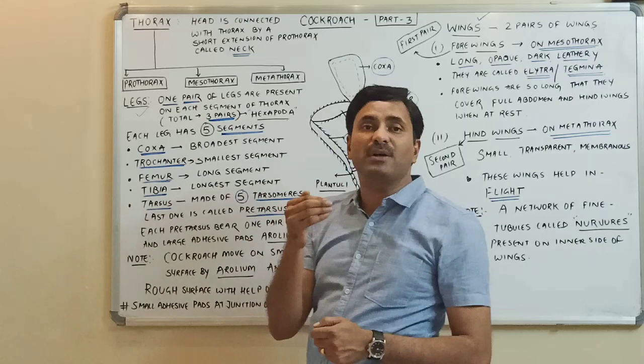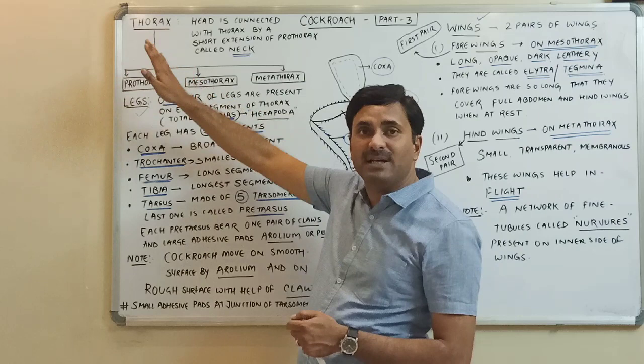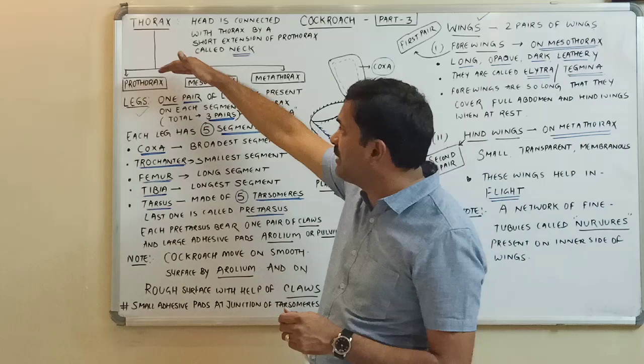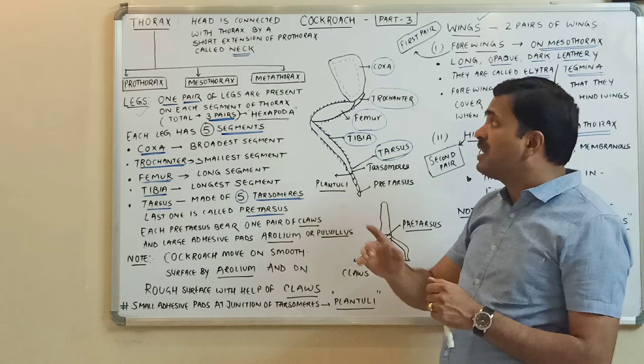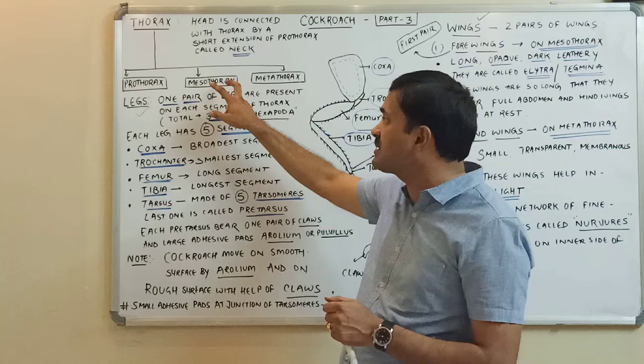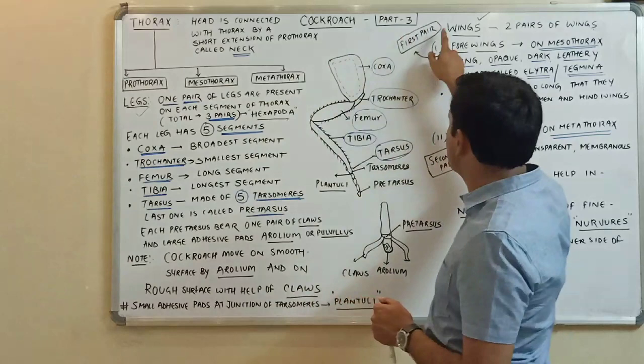In the thorax there are three segments. The first segment is called the prothorax, the second segment is called the mesothorax, and the third segment is called the metathorax. Associated with these three segments are the legs as well as the wings.